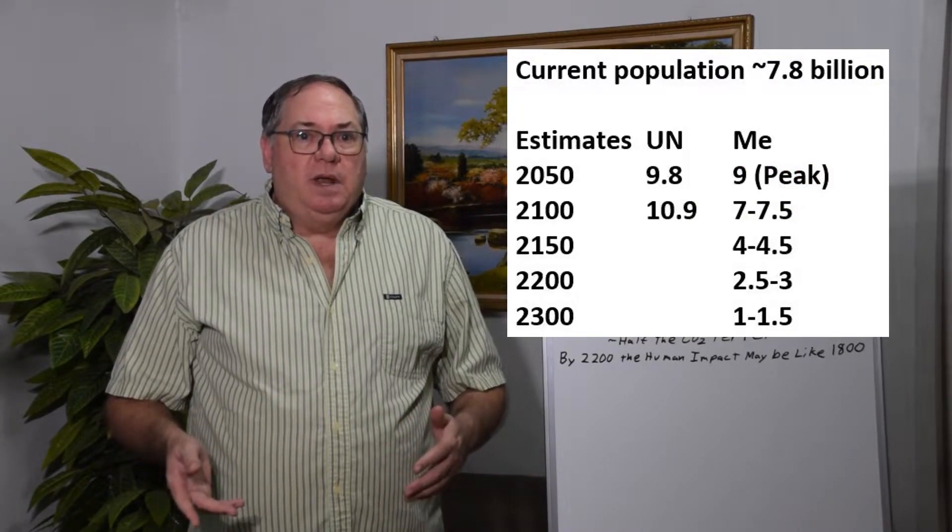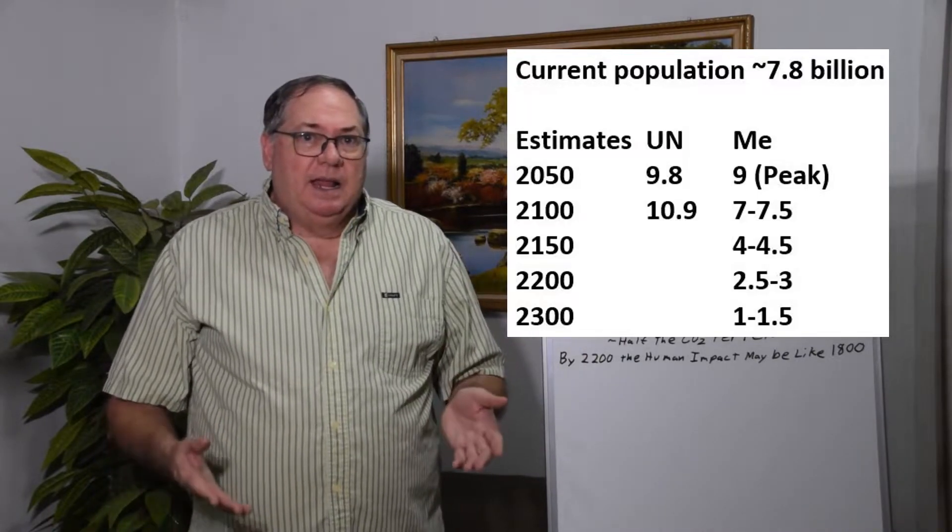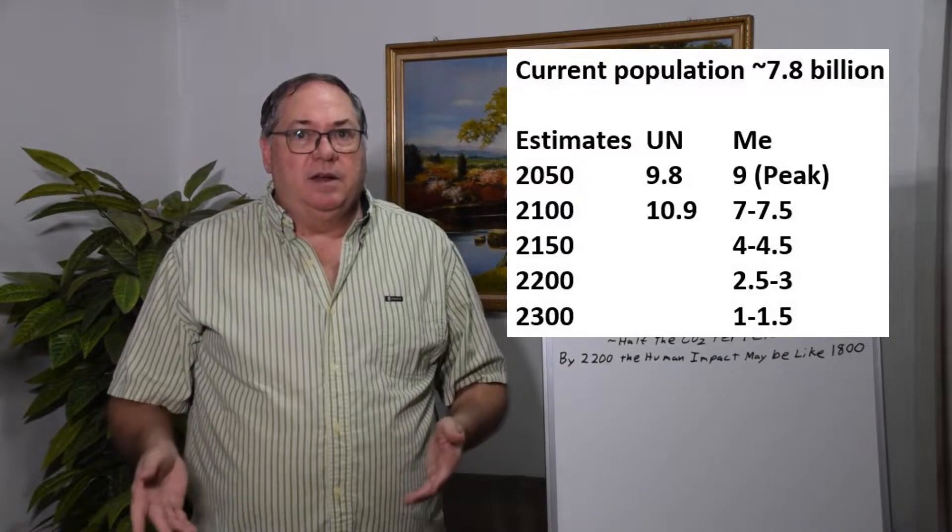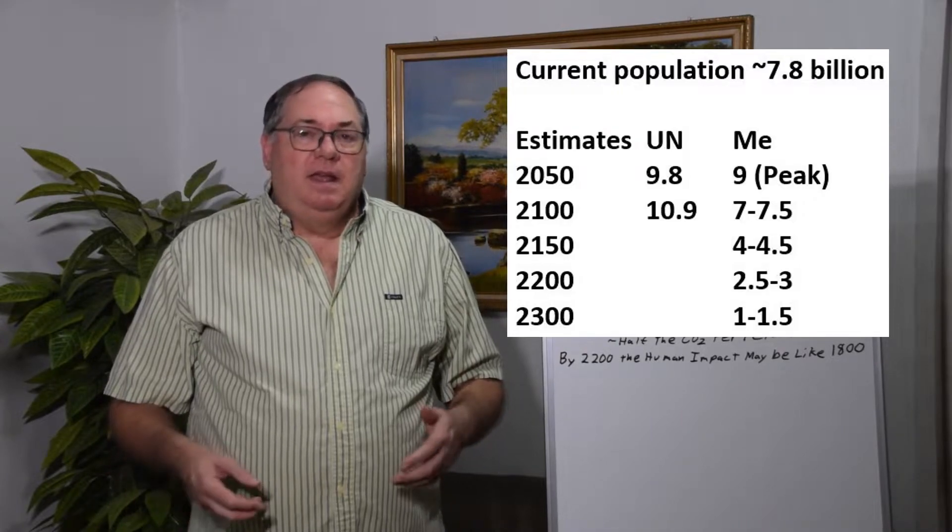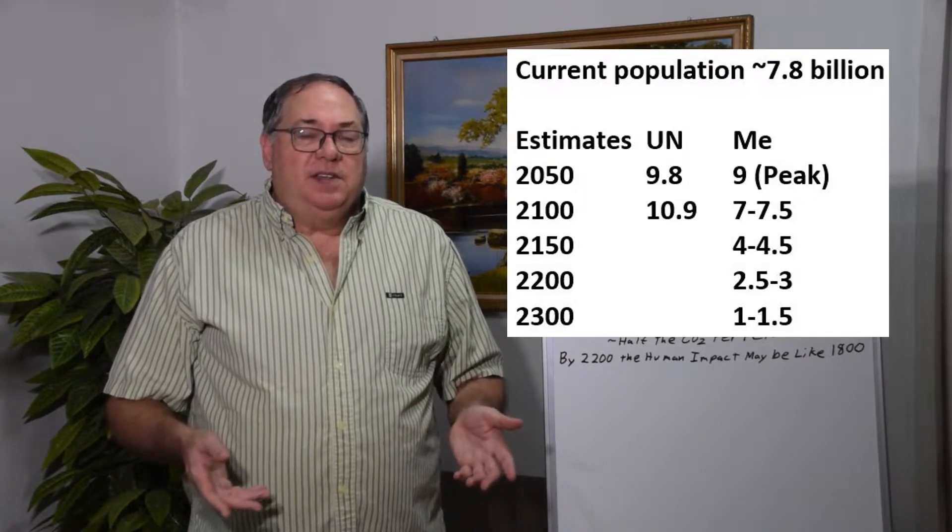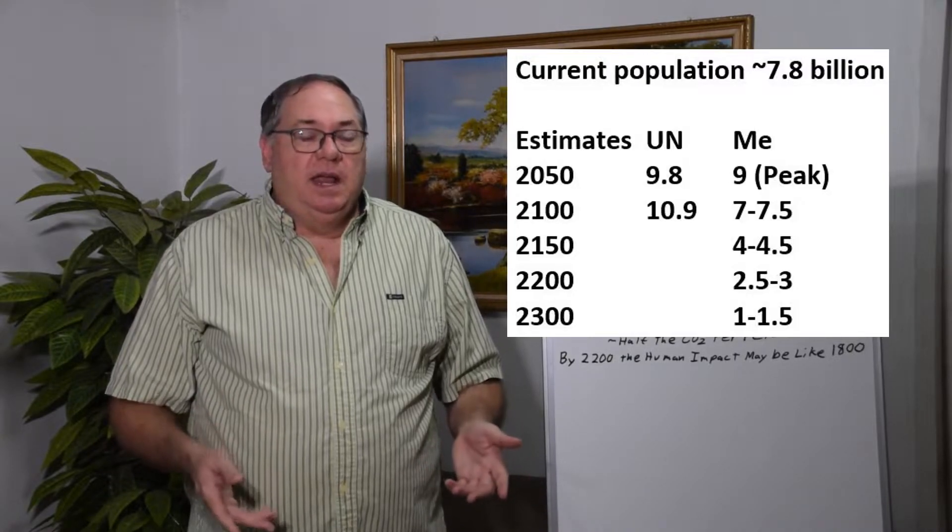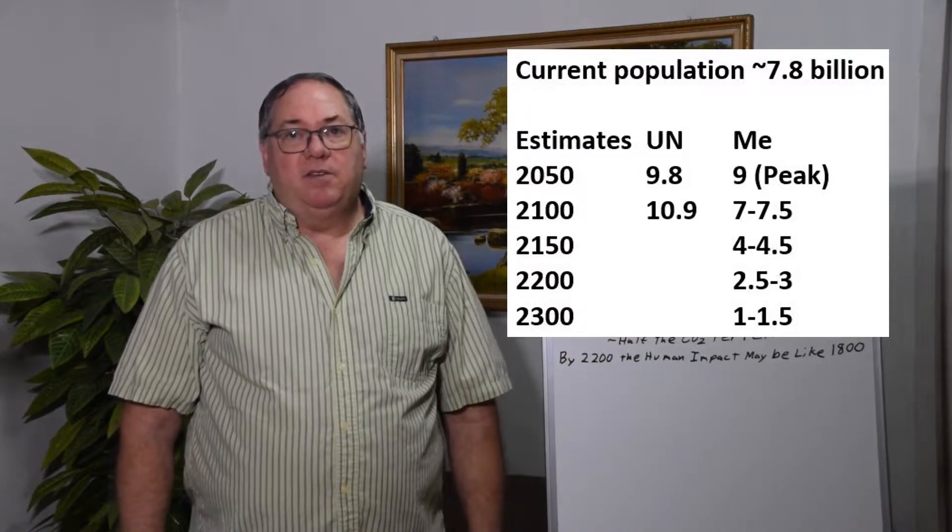So Darrell Bricker and I both estimate that the population is going to peak at about 9 billion people around the year 2050 and then begin declining. And by the end of this century, it will be back down to a level close to where it is today or lower. I really think it will be in the 7 to 7.5 billion range by the end of the century.